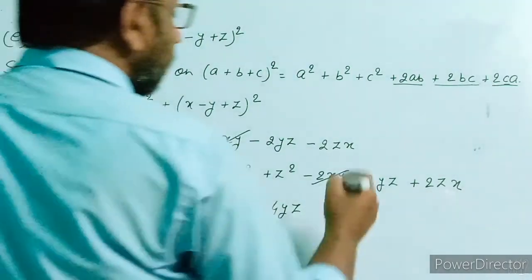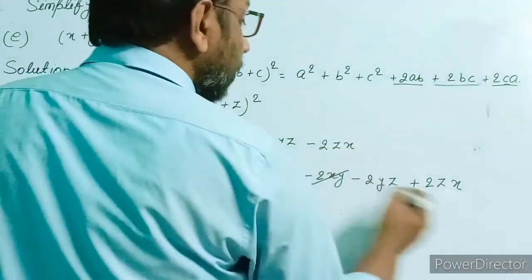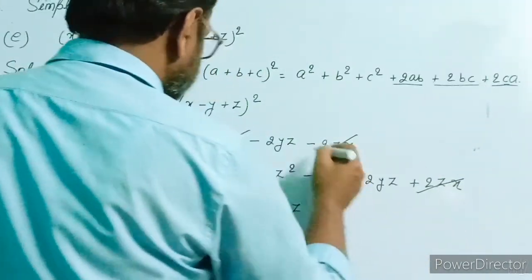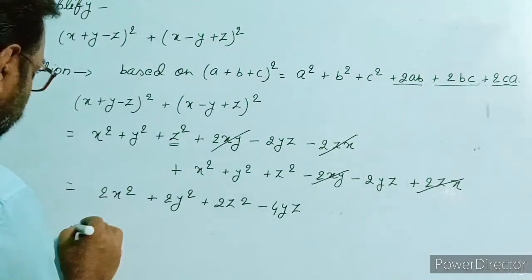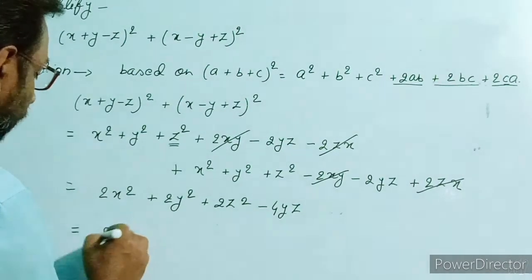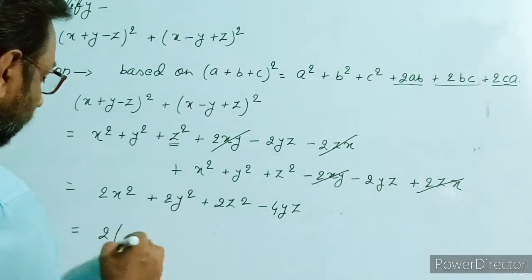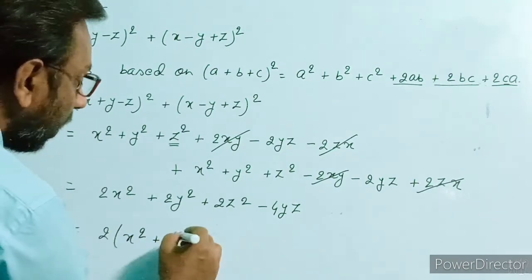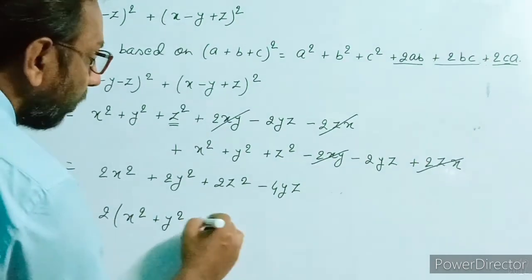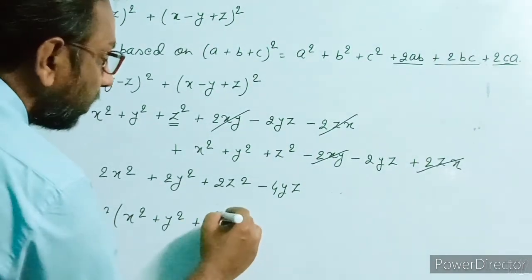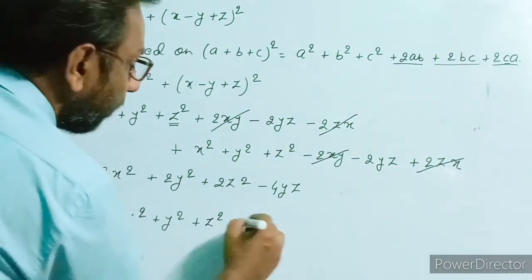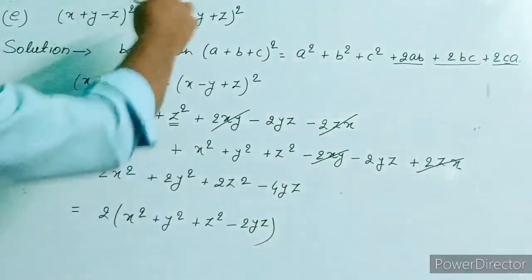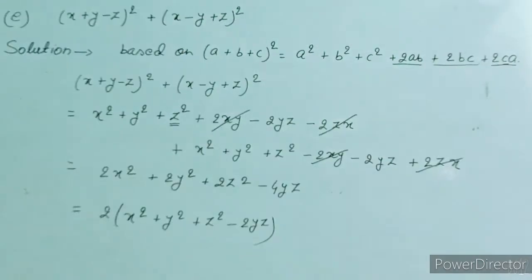Taking 2 as common, the final answer is 2(x² + y² + z² - 2yz). This is the solution of this question.